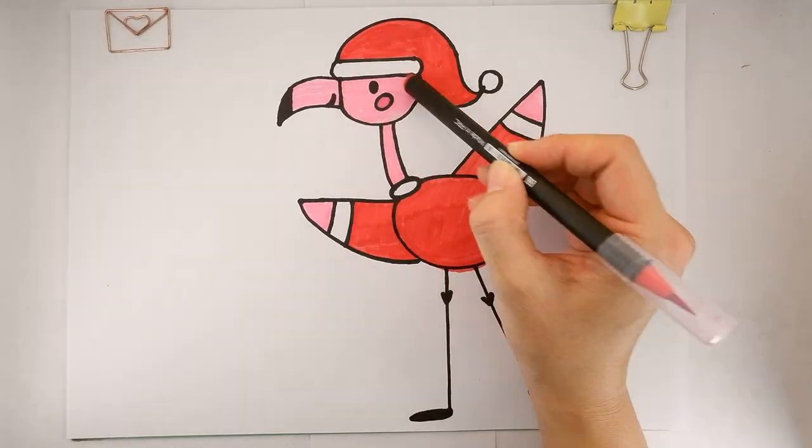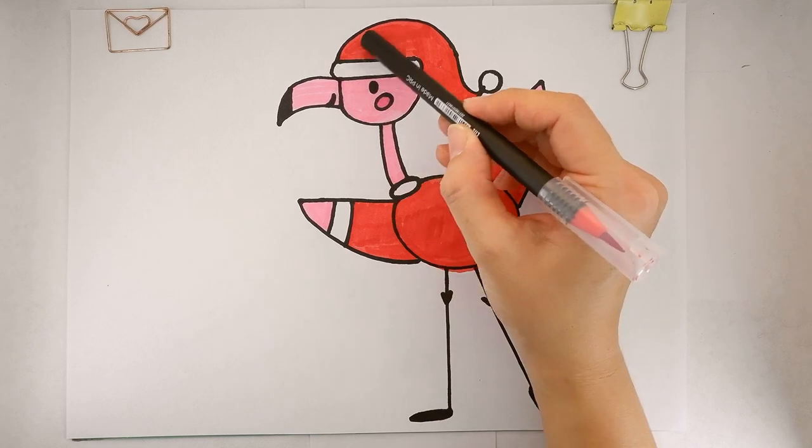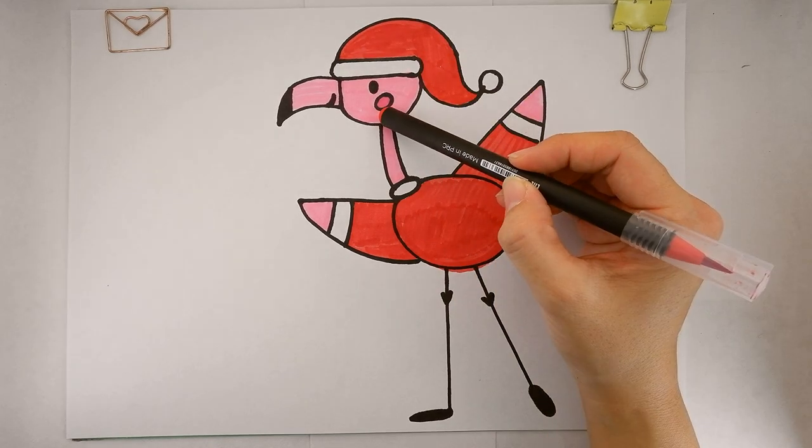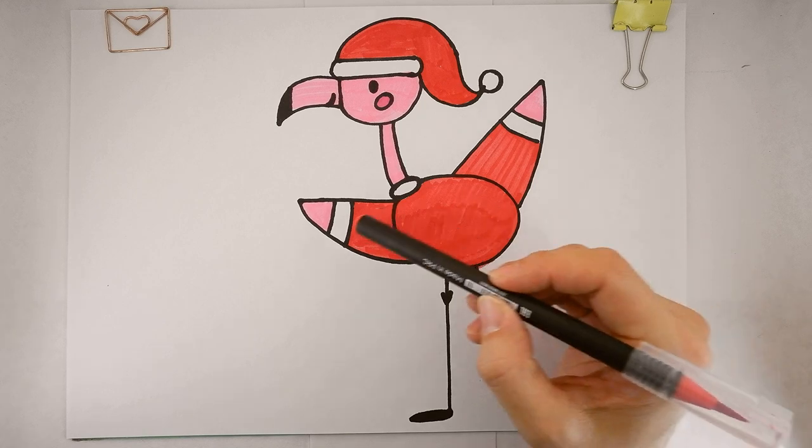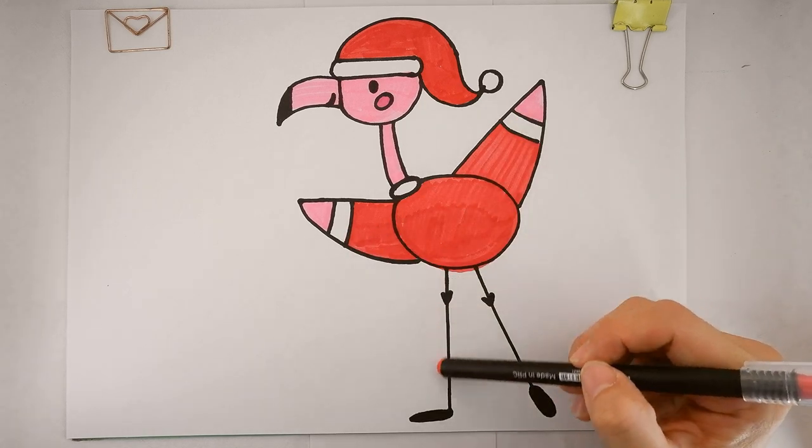Now let's look at the picture. We can see the hat, beak, head, neck, body, wings, and legs.